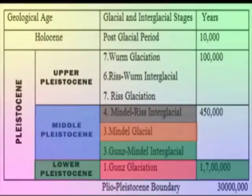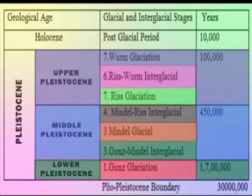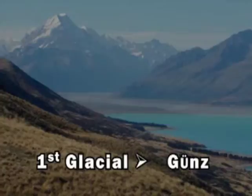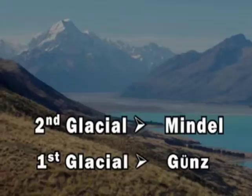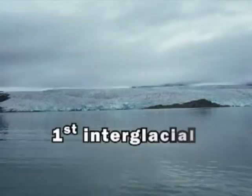The Günz-Mindel interglaciation and Mindel glaciation and Mindel-Riss interglacial fall within the Middle Pleistocene, beginning around 450,000 years ago. Finally, the Riss glaciation, Riss-Würm interglaciation, and Würm glaciation occur within the Upper Pleistocene, beginning around 100,000 years ago. Some pre-historians prefer naming the glacial periods in numerical sequence: 1st glacial for Günz, 2nd for Mindel, 3rd for Riss, and 4th for Würm. The interglacials are correspondingly termed 1st, 2nd, and 3rd interglacial periods.